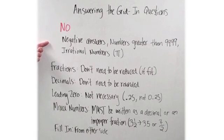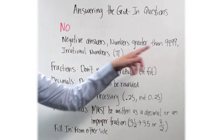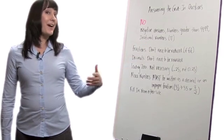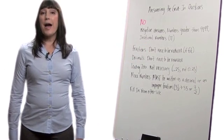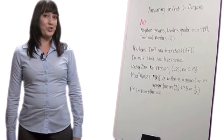These are negative numbers or negative answers, numbers greater than 9,999 or irrational numbers like pi. So if you get an answer like that, go back and take a second look because it's not a possible answer choice for your gridding questions.